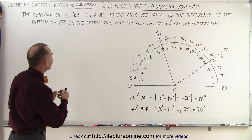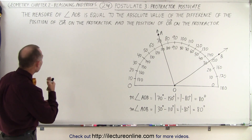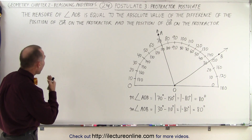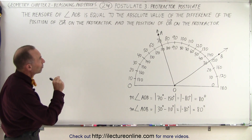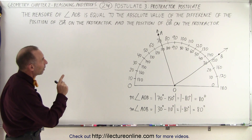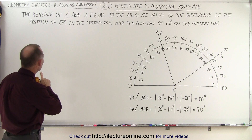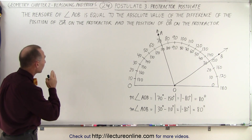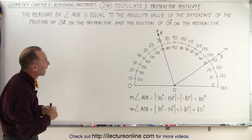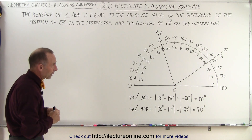So the definition can be as follows. The measure of angle AOB is equal to the absolute value of the difference of the position of the ray OA on the protractor and the position of the ray OB on the protractor.